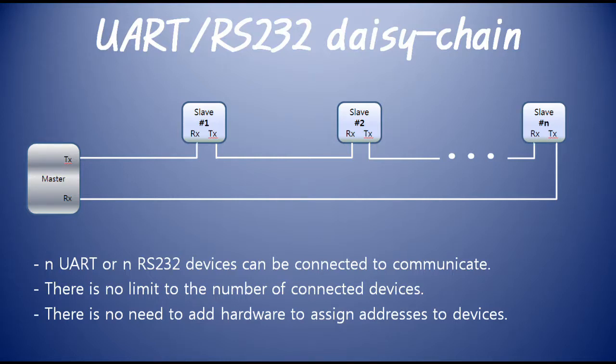Daisy chain refers to a hardware device that is continuously connected. As shown in the figure, there is no limit on the number of connected slave nodes when configuring a daisy chain. Each slave device in the daisy chain can allocate an address as a slave device number by hardware, but it can also assign an address by software.